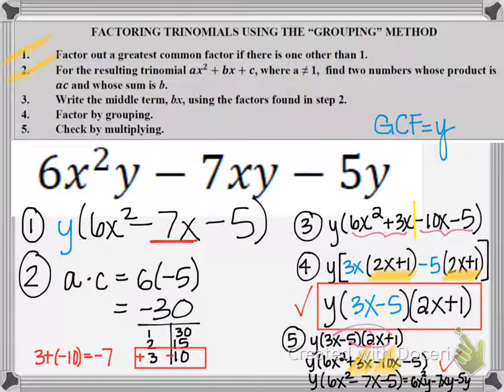So I know my factored answer, y times 3x minus 5 times 2x plus 1 is the correct factorization.